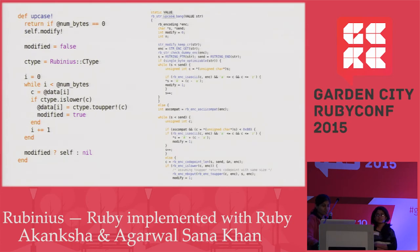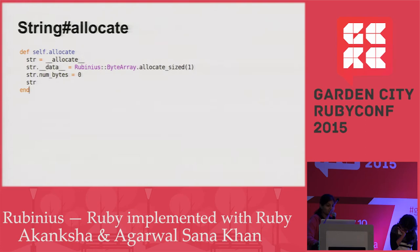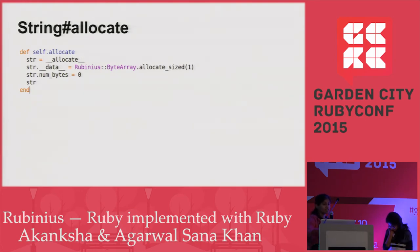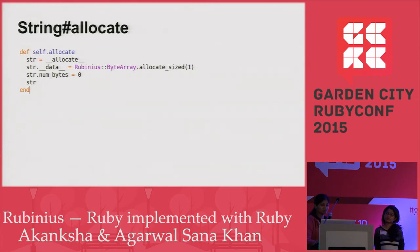There are two variables — number of bytes and data — which we haven't covered yet. Let's see how the string is implemented in Rubinius. The string contains data and number of bytes. Data is stored in Rubinius in a byte array itself. You can drill down and understand the internals in Rubinius because they are written in Ruby itself.